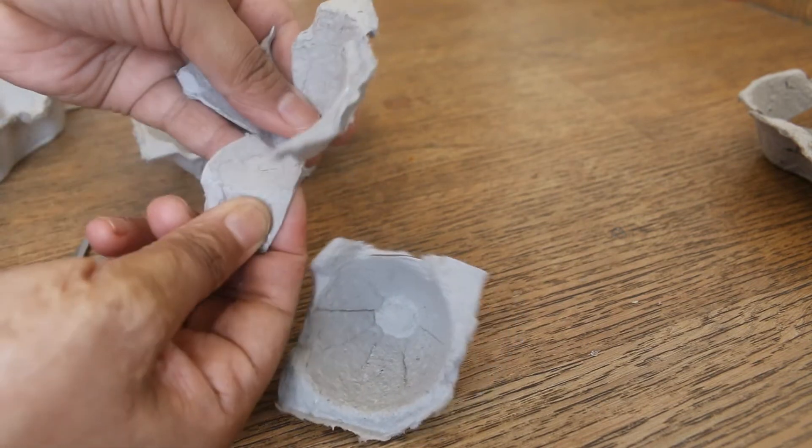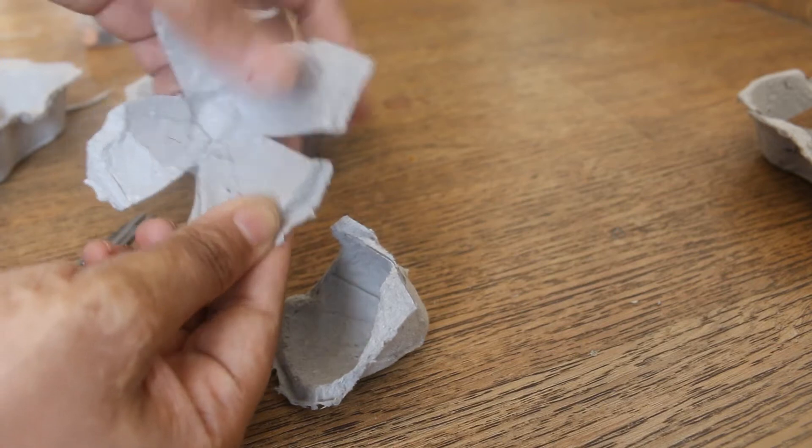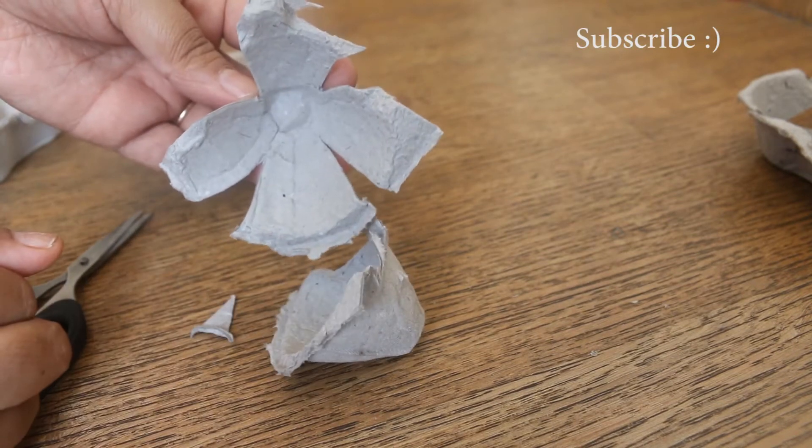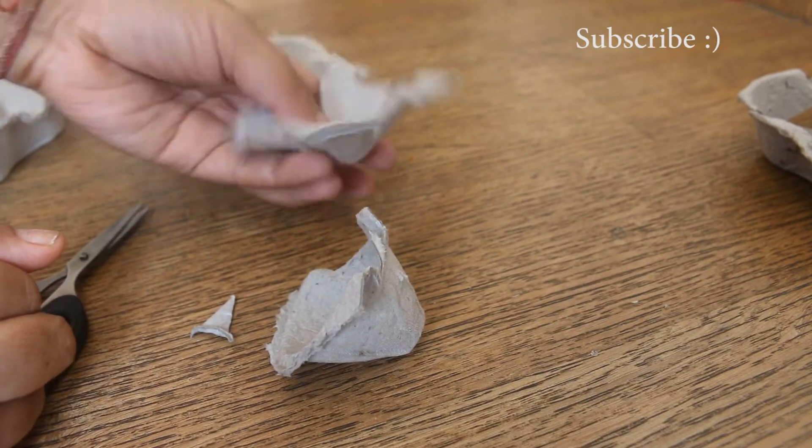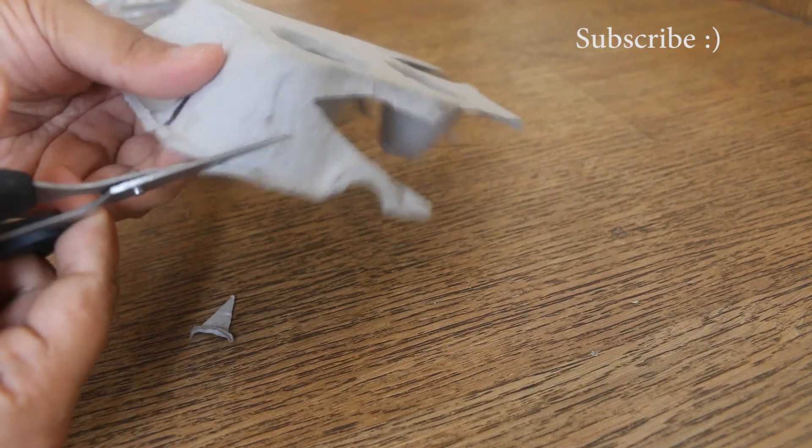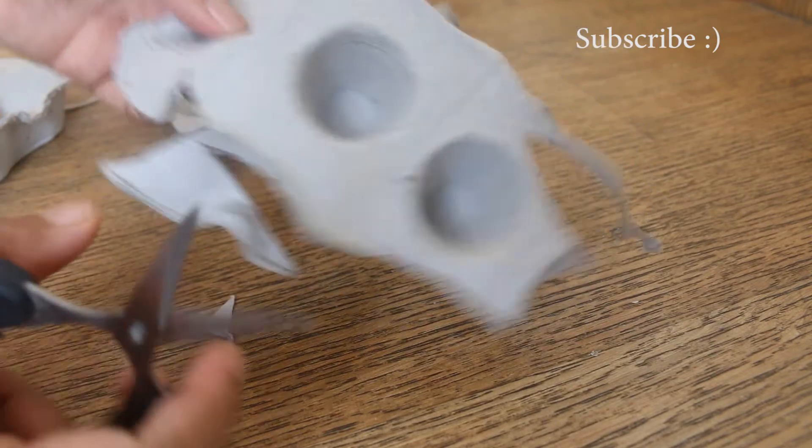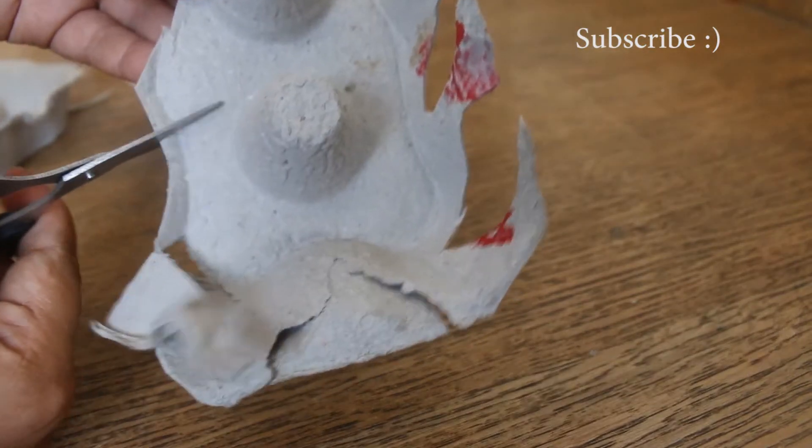You can create shapes of your choice—small petals, bigger petals, anything you prefer. Now I'm going to start with the leaves cutting. I had just one carton with me; if you have another carton you can make bigger leaves as well. For the stems I just used the leftover pieces from cutting.